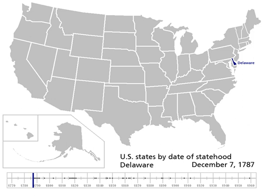Enacted by the Confederation Congress on July 13, 1787, it created the Northwest Territory, the first organized incorporated territory of the United States. The Northwest Ordinance provided for the admission of several new states from within its bounds: "There shall be formed in the said territory, not less than three nor more than five states, and whenever any of the said states shall have 60,000 free inhabitants therein, such state shall be admitted, by its delegates, into the Congress of the United States, on an equal footing with the original states in all respects whatever."